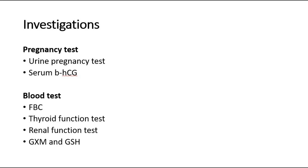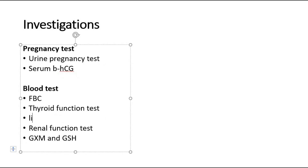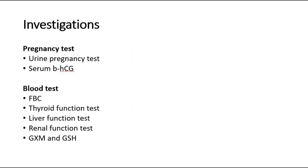Liver function test to exclude liver metastasis and also assess liver function, as the patient might be started on chemotherapy and most chemotherapeutic drugs are metabolized in the liver. Renal function test also to assess kidney function, as the chemotherapy drugs are excreted by the kidneys and are potentially nephrotoxic. We can also do group cross-match and group save, around 2–4 pints of whole blood, before doing suction and curettage.